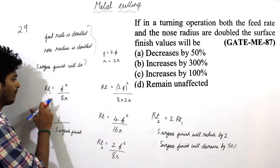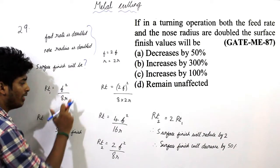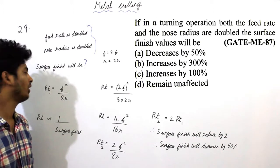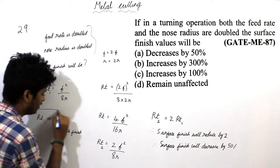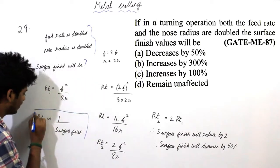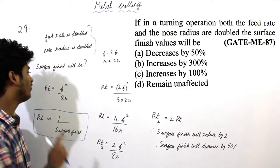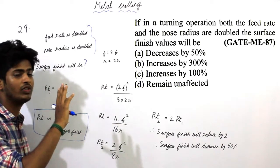We all know that Rt is equal to f squared by 8r. Rt is maximum peak to valley height. I have already explained the relationship between Rt and surface finish. Rt is inversely proportional to surface finish. If Rt increases, surface finish will decrease.